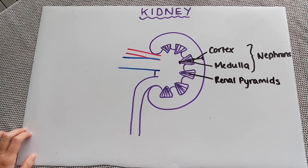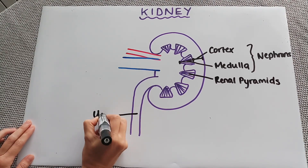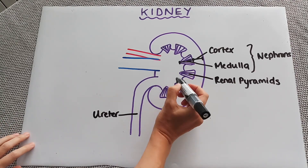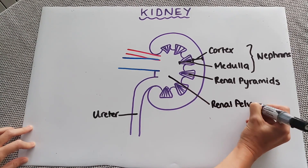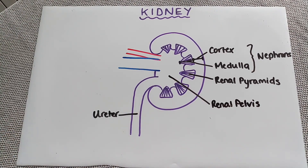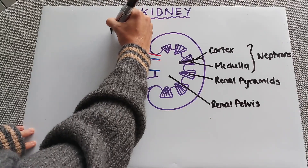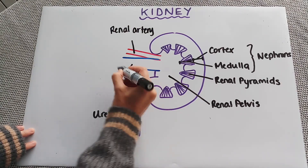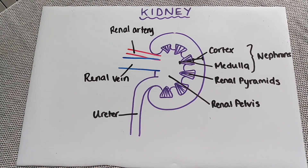In terms of the different tubes coming into and out of the kidney: this one here is the ureter, and that takes out the waste product the kidney has created and put into the renal pelvis — 'renal' means anything to do with the kidney. Then we've got our two blood vessels: the red one is the renal artery and the blue one is the renal vein.